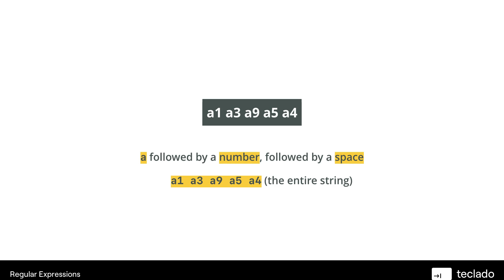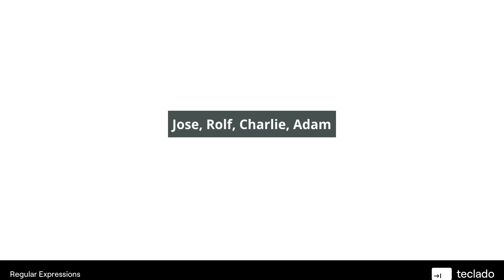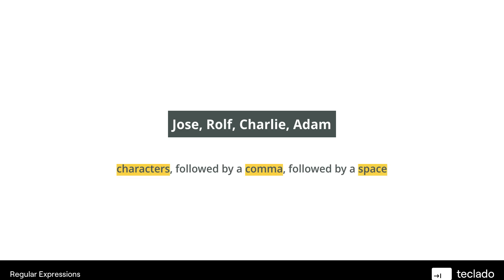Let's look at another example — just a couple of examples of patterns so you know a bit of what we're looking for. Here's another pattern: Jose, space, Rolf, space, Charlie, space, Adam. What I see here are some characters like letters, followed by a comma, followed by a space. That's a pattern, potentially. Of course, the other pattern is the entire string again, but that's going to be the case for every instance.